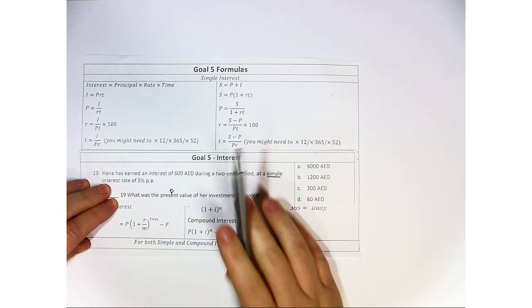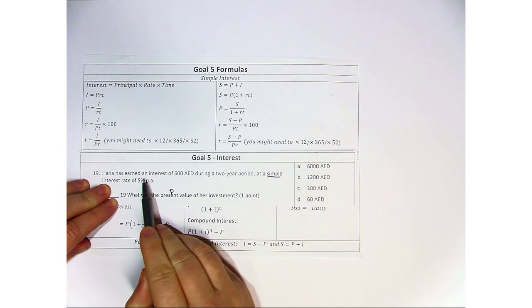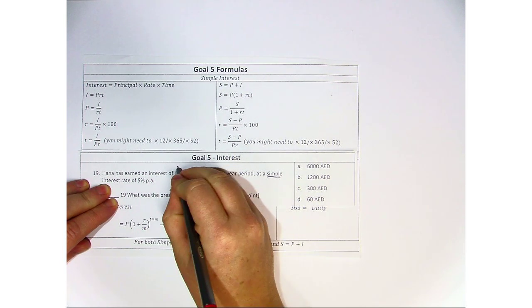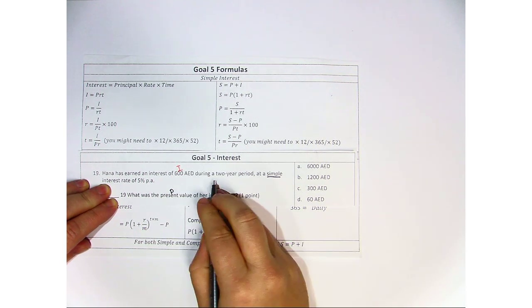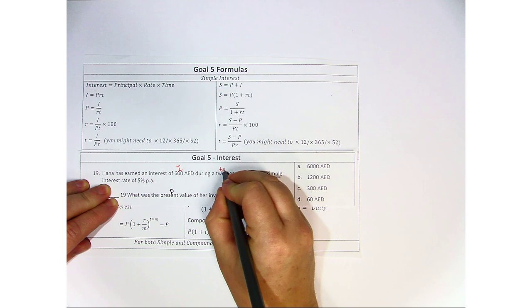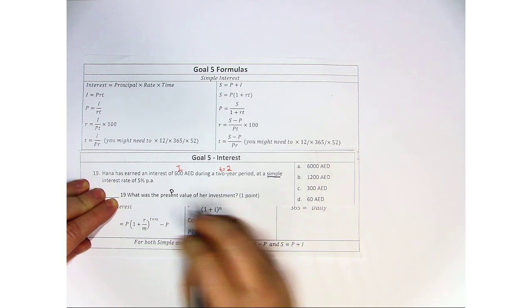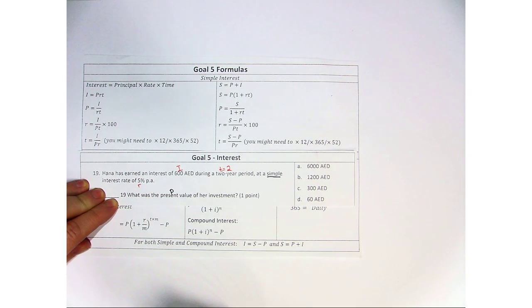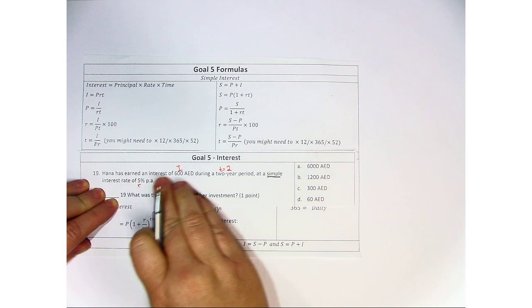So we're going to go ahead and indicate what we have. Hannah has earned an interest of six hundred dirhams, so this is I during a two-year period, so T equals two, at a simple interest rate of five percent. So this is our rate. So we have R, I, and T.